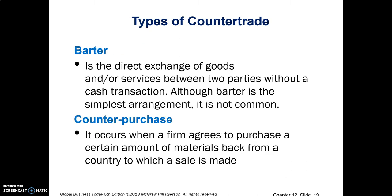The first type is barter — the simplest form and not very common. It's a direct exchange of goods and services between two parties without a cash transaction. Some problems with bartering: if goods are not exchanged at the same time, one party ends up financing the other for a period of time. A second problem is that you may accept goods as part of the deal that you do not want, can't use, or have difficulty reselling. Barter is the most restrictive, as you need to find someone that wants what you have and has what you want.